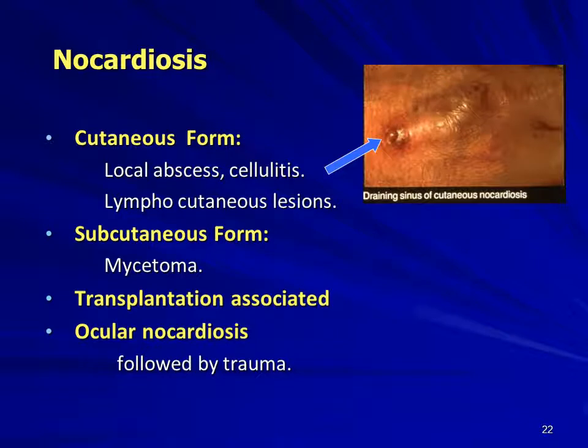Nocardiosis appears in cutaneous form with local abscess, cellulitis, and lymphocutaneous lesions, and in subcutaneous form as mycetoma — which will be discussed under mycology since most mycetoma lesions are produced by fungal organisms. Nocardiosis also occurs following transplantation because immunosuppressive agents lower immunity, making these Nocardia species responsible for infection.